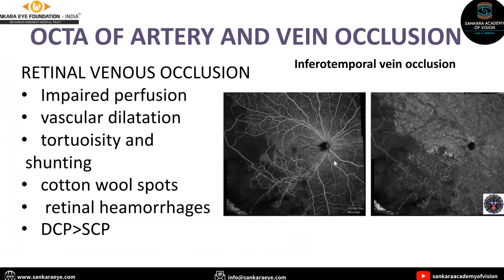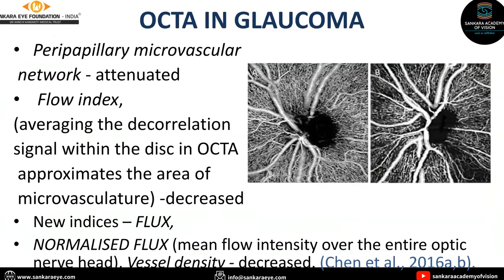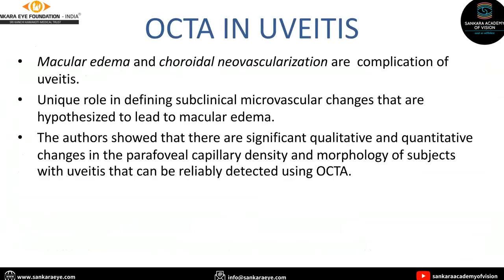It also helps to identify artery and vein occlusions, including branch retinal vein occlusions. In this photo, you can see an inferotemporal vein occlusion with impaired perfusion, as well as an image of BRAO and central retinal artery occlusion. It also helps in glaucoma, where there will be a peripapillary microvascular network attenuation and the flow index — averaging the decorrelation signals within the disc in OCTA — approximates the area of microvasculature. That will also be decreased, along with other indices such as flux, normalized flux, and vessel density. In uveitis, complications such as macular edema and choroidal neovascularization can also be seen.